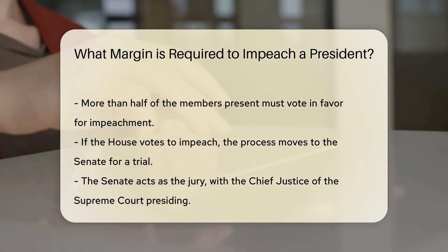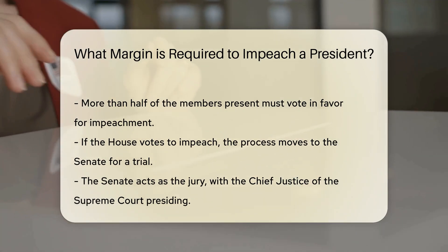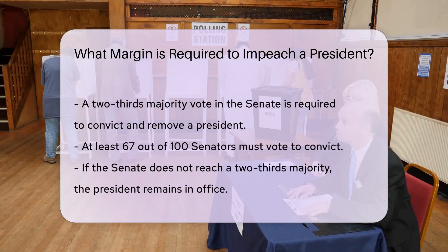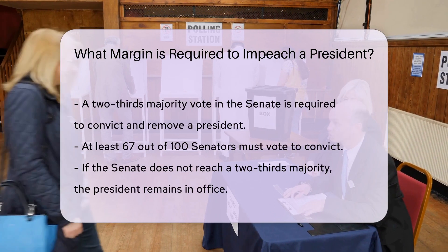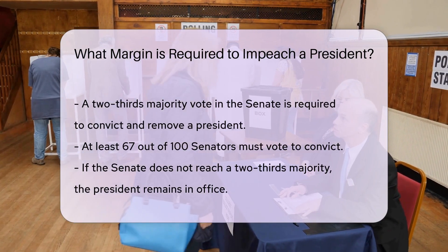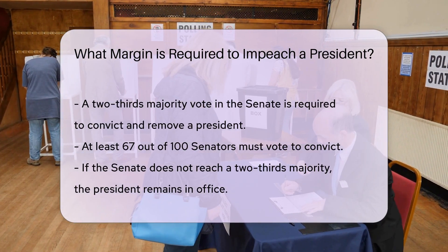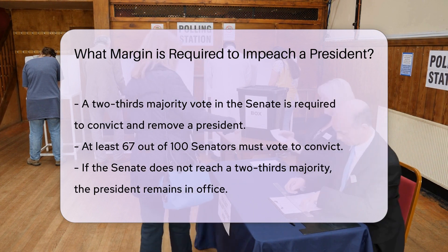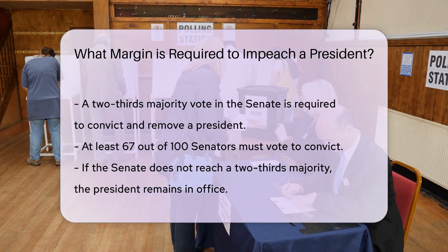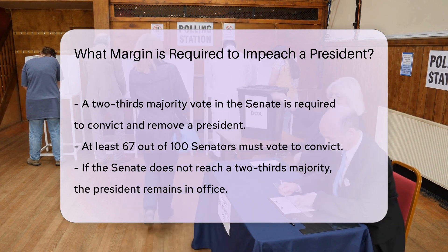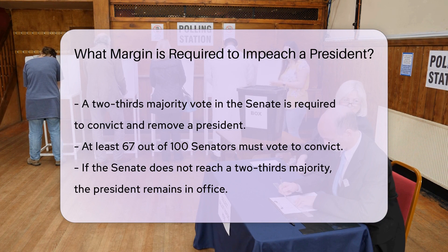To convict and remove a president from office, the Senate must reach a higher threshold. A two-thirds majority vote is required for conviction. This means at least 67 out of 100 senators must vote to convict. If the Senate does not reach this two-thirds majority, the president remains in office.